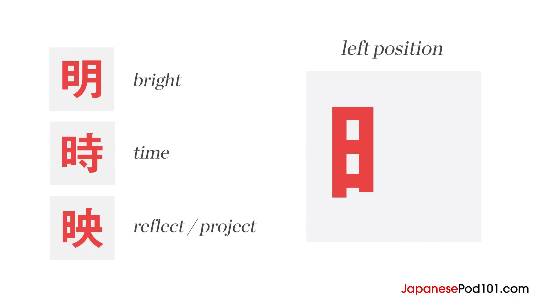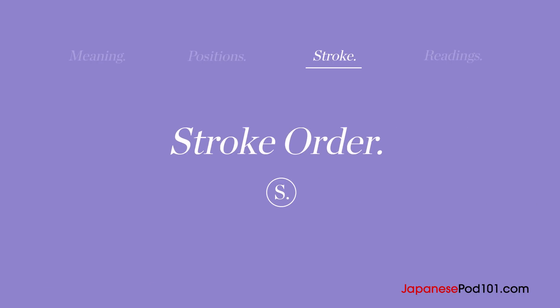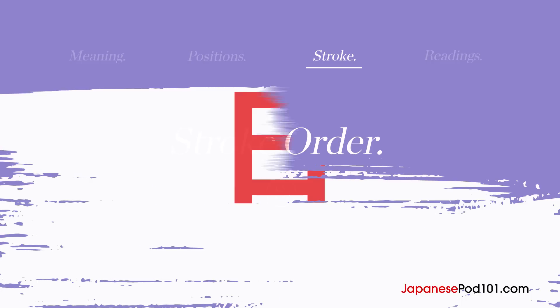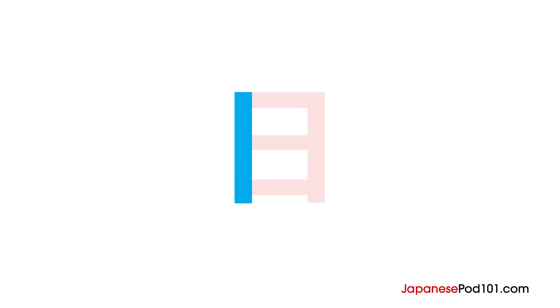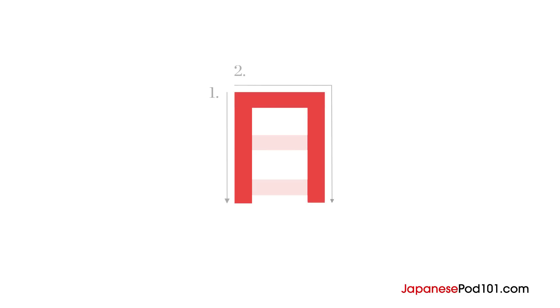Now let's learn how to write this radical. The day radical is written in four strokes. The first stroke is a vertical stroke that starts on the left and goes from top to bottom. The second stroke is a tall right-hand corner — it connects with the first stroke, goes left to right, bends, and then goes straight down. The third stroke is a horizontal stroke that occurs at the halfway point and goes left to right.